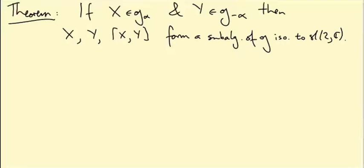Okay, so we're going to prove this theorem that if X is in G alpha and Y is in G minus alpha, then X, Y and their bracket form a subalgebra of little G isomorphic to little SL2C.